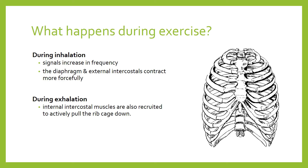During exhalation in exercise, this becomes an active process. A signal is sent to the internal intercostal muscles, which are recruited and contract to pull the rib cage back down forcefully. At rest this happens through gravity, but during exercise we need it to happen faster and to a greater extent. The internal intercostals pull the rib cage down further, squeezing the thoracic cavity smaller, creating a higher pressure inside the lungs relative to outside, driving the breath out.